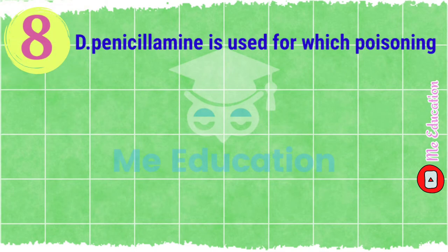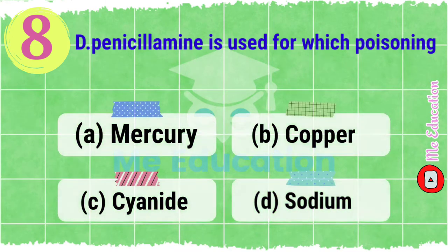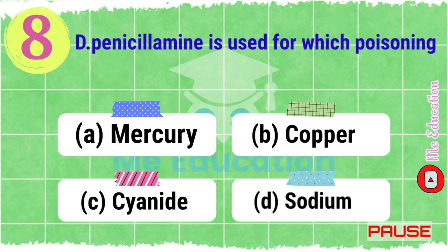Question number eight: D-penicillamine is used for which poisoning? Options: A) mercury, B) copper, C) cyanide, D) sodium. Pause the video and try to solve this question. The right answer is option B, copper.